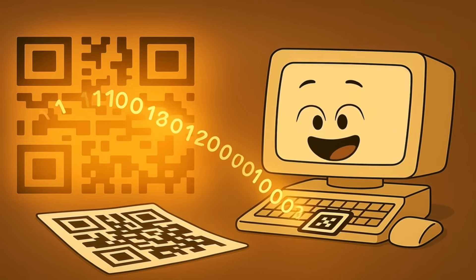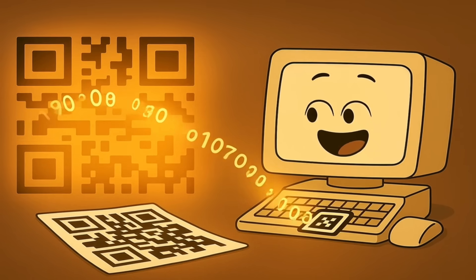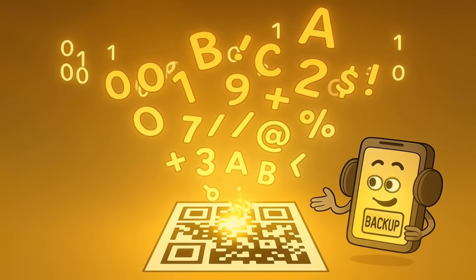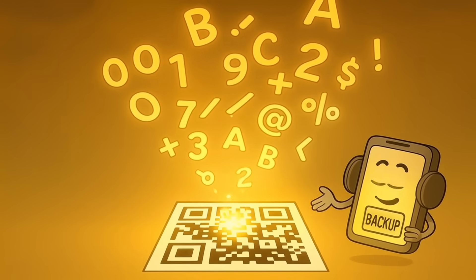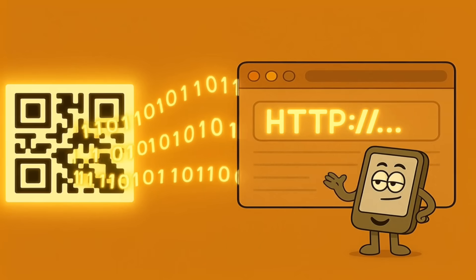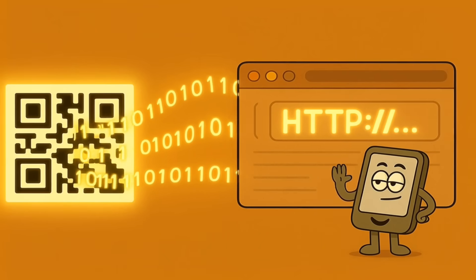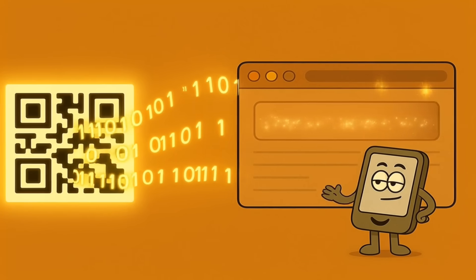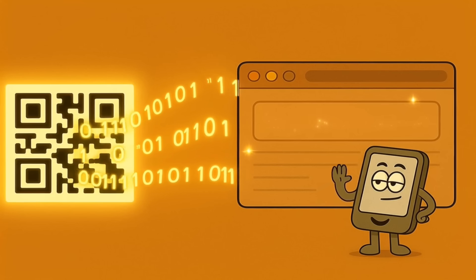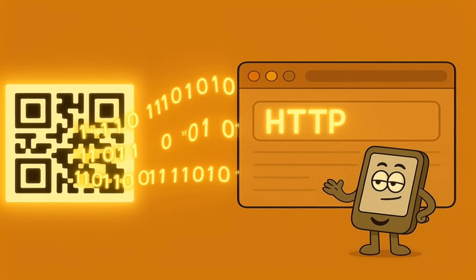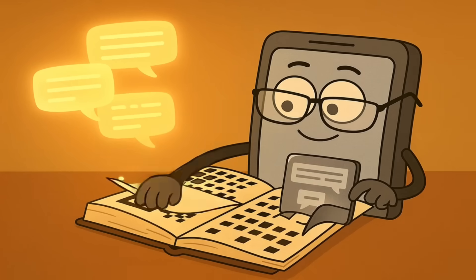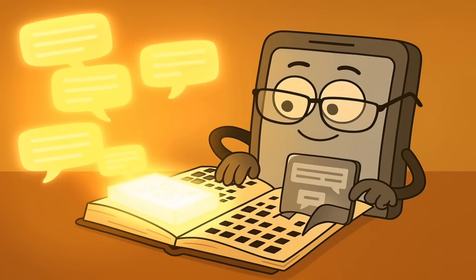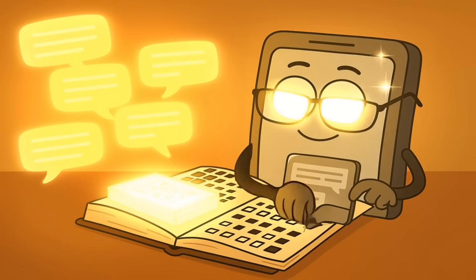This long string of ones and zeros is a special code that computers understand perfectly. Each group of these numbers represents a letter, a number, or a symbol. So a specific pattern of ones and zeros might mean the letter H, another means T, another means Y, another means P, and so on, until it's spelled out the entire website address that you're trying to visit. Your phone is a speed reader, translating that black and white square language into human language almost instantly.